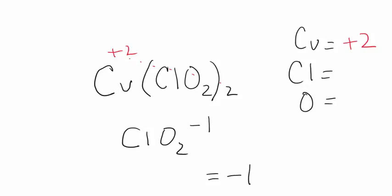Now oxygen is normally minus 2. So if you have minus 2 times 2, that's going to give you a total charge on the oxygens of minus 4.